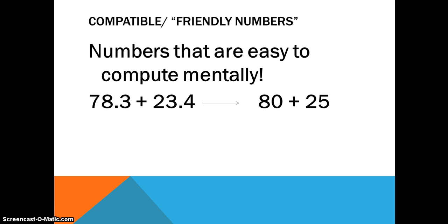For example, the first number that we are going to be finding the sum for is going to be 78 and 3 tenths plus 23 and 4 tenths.